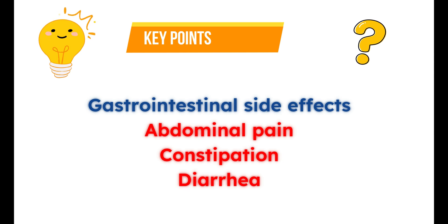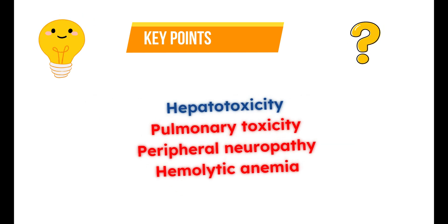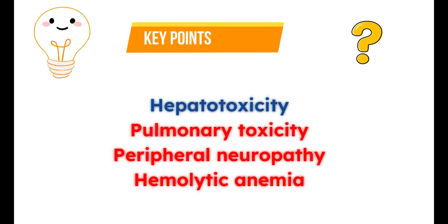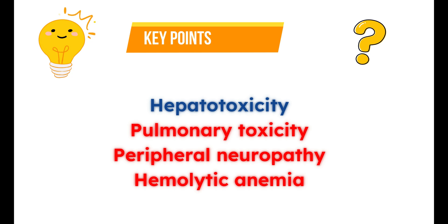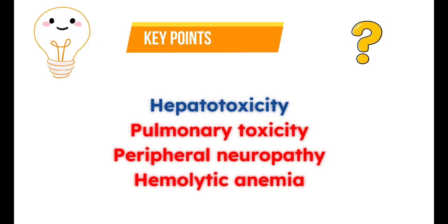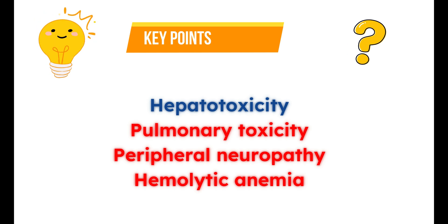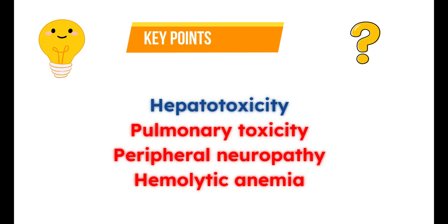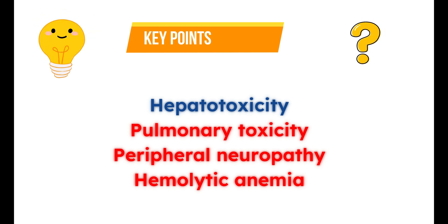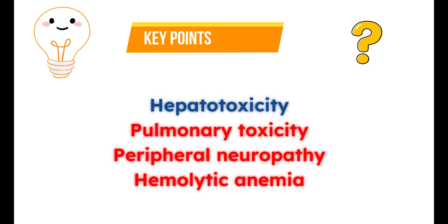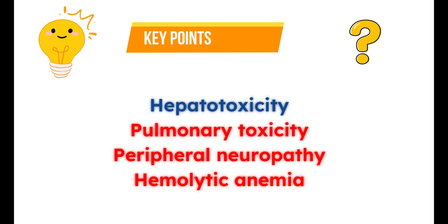What are the important precautions with this medication? At higher doses, this medication produces hepatotoxicity, so liver tests should be done when it is used at higher doses. On long-term therapy, Nitrofurantoin can produce pulmonary toxicity. In people with pre-existing risk factors, this medication can produce peripheral neuropathy. Hemolytic anemia can be observed in people with glucose-6-phosphate dehydrogenase enzyme deficiency.